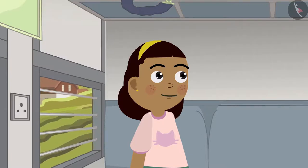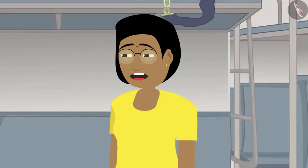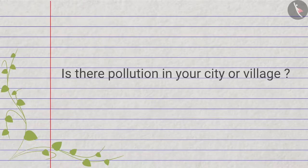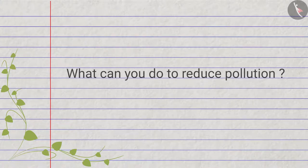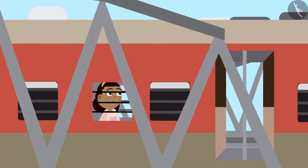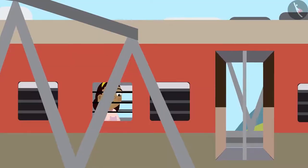Fuel is very expensive, and we should try to reduce pollution as much as possible. Zia agrees that petrol and diesel are expensive. Her mother adds that petrol and diesel are not only expensive but also decreasing slowly. The video asks: is there pollution in your city or village, and what can you do to reduce it? Suddenly the sound of the running train changes and Zia looks down to see no land — only water.